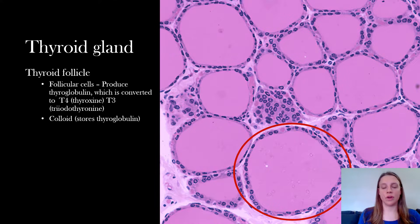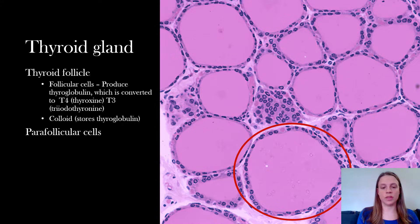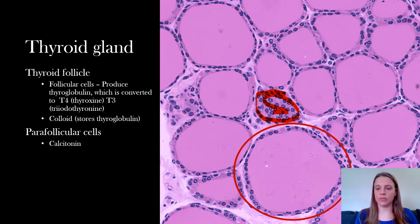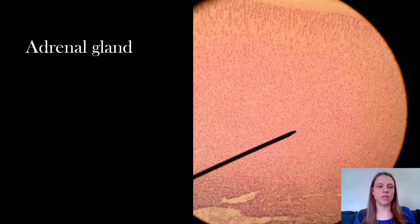The colloid is all that pink gel on the inside of the thyroid follicle. You also have parafollicular cells — the word 'para' means next to, so these are cells next to or in between the follicles. All of these cells here are parafollicular, and parafollicular cells produce calcitonin.